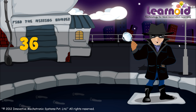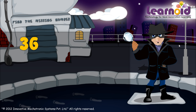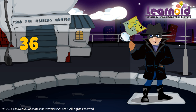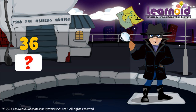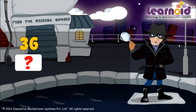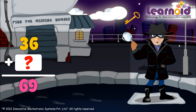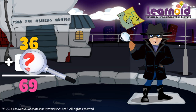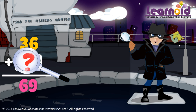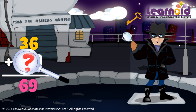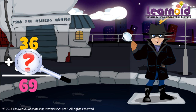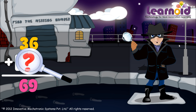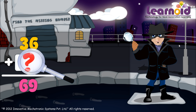The first number is 36. The second number is missing. The sum of two numbers is 69. If we have to find the second number, we have to subtract the first number from the sum of two numbers.